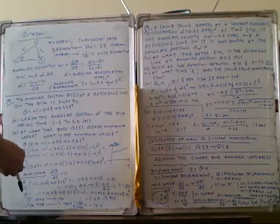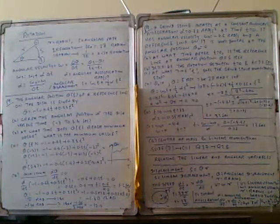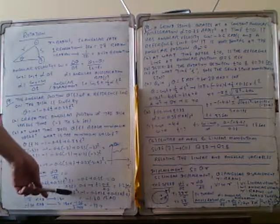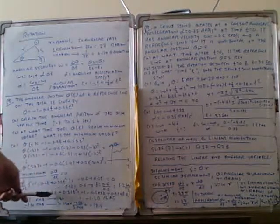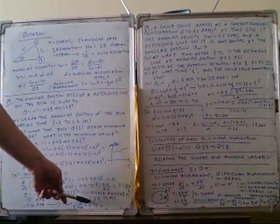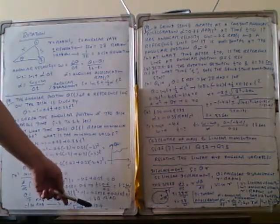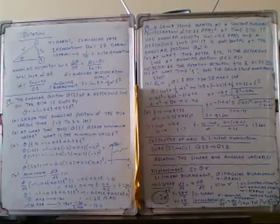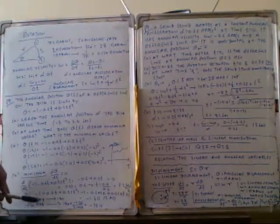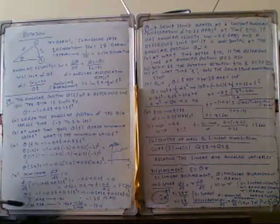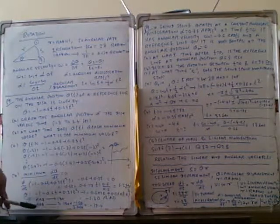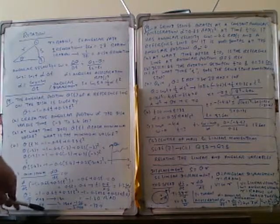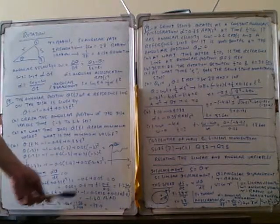We can also calculate the angular position at t equals one half second. Substituting back, we get minus 1/36 radian, or minus 77.9 degrees. Since pi radians equals 180 degrees, the value of minus 1/36 radian converts to minus 77.9 degrees.